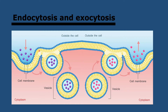Moving on to endocytosis and exocytosis. Vesicles are small sacks of membrane with a droplet of fluid inside, and they can be formed from the plasma membrane when the plasma membrane invaginates. This happens with the help of proteins and ATP, and is called endocytosis. The vesicle contains water and solutes from outside the cell and can then move materials around the cell. Vesicles can also fuse with the plasma membrane to release their contents outside — that is called exocytosis.